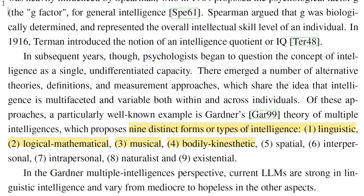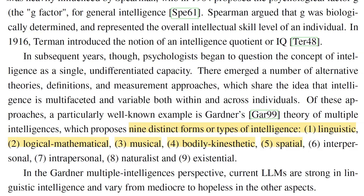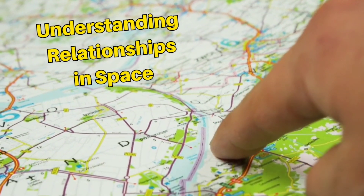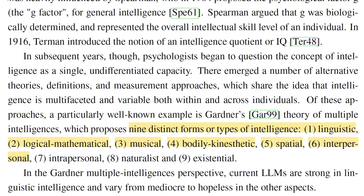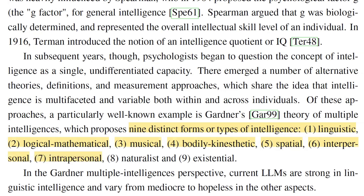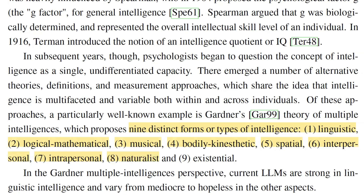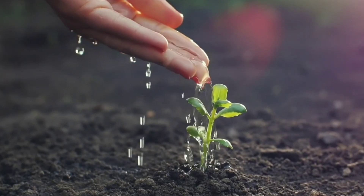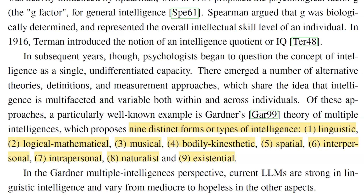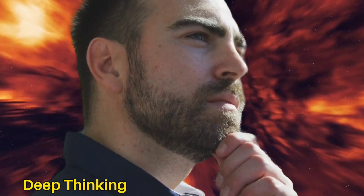Fourth, bodily-kinesthetic: the ability to use one's body and express oneself through motion. Fifth, spatial: the ability to understand relationships in space and manipulate objects in a given space. Sixth, interpersonal: the ability to understand and interact with others. Seventh, intrapersonal: the ability to understand oneself and reflect on one's thoughts. Eighth, naturalist: the ability to observe and understand natural elements such as animals, plants, and the overall environment. Ninth, existential: the ability to think about deep questions about our existence, its meaning and purpose.